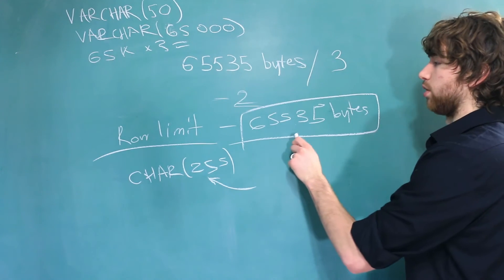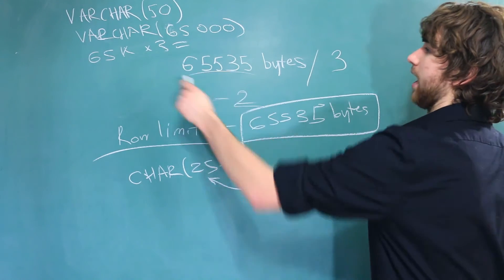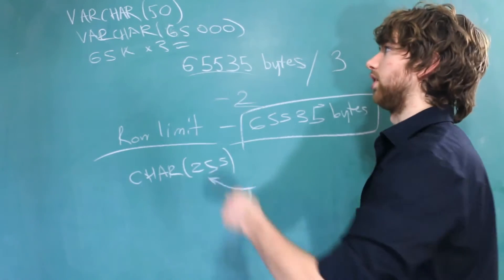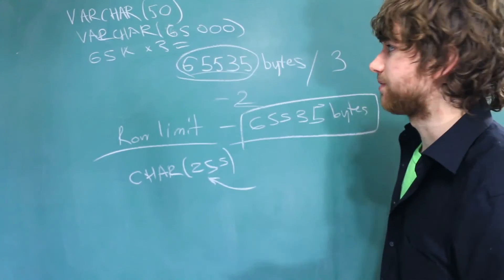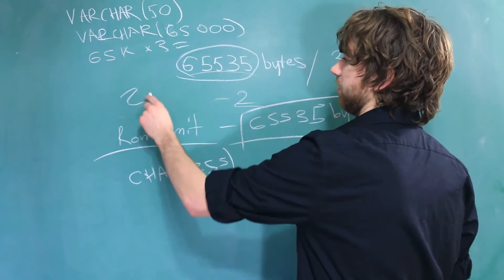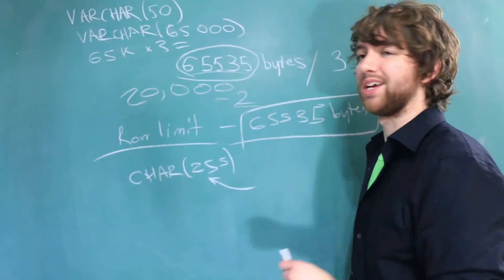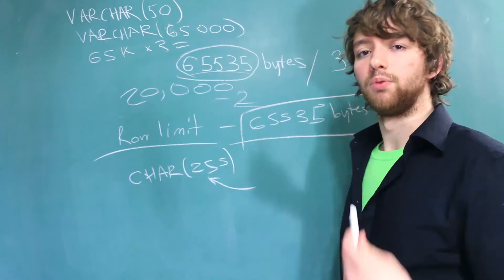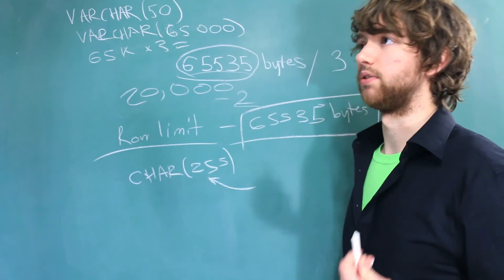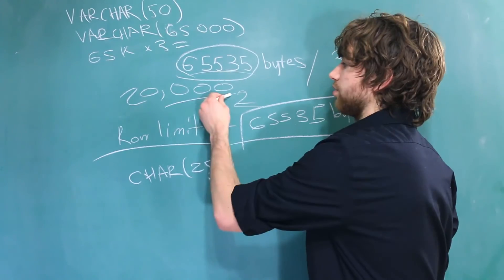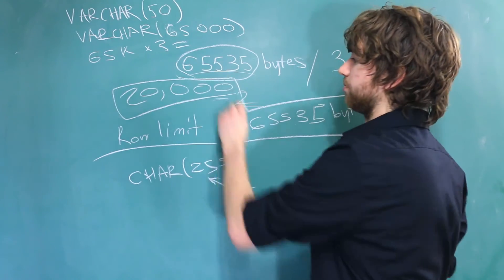For VARCHAR, since we have this row limit, we can't go all the way up to the max. That means you're limited to a little bit less than a third of this. So to be on the safe side, I would never go past like 20,000. And that being said, you should never go over what you need. What I mean by that is if every row is only going to have 2,000 characters, there's no need to create a column that can store up to 20,000.